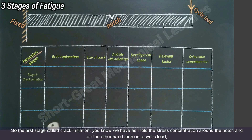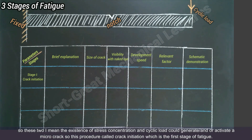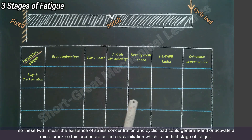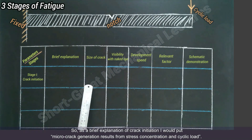The first stage is called crack initiation. We have stress concentration around the notch and a cyclic load, so the existence of stress concentration and cyclic load could generate and activate a micro crack. This procedure is called crack initiation, which is the first stage of fatigue.